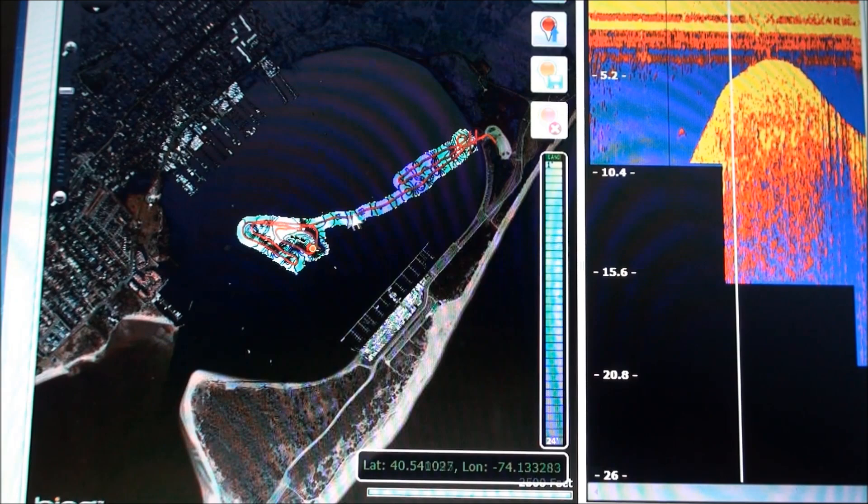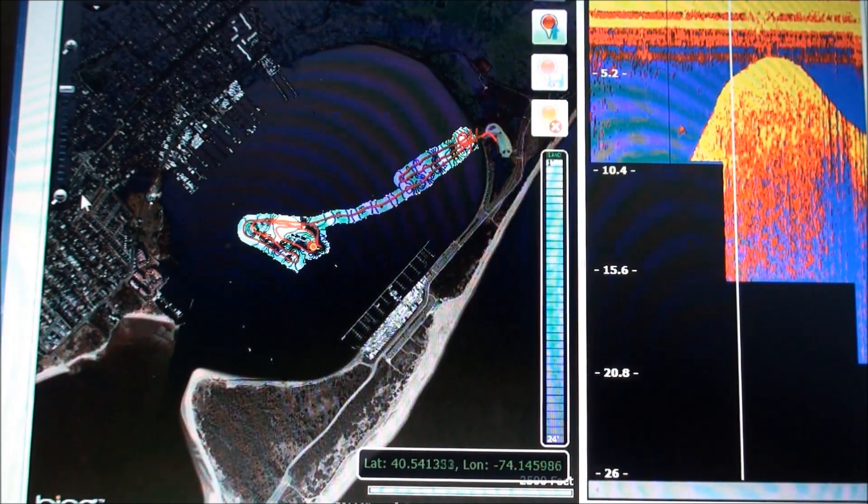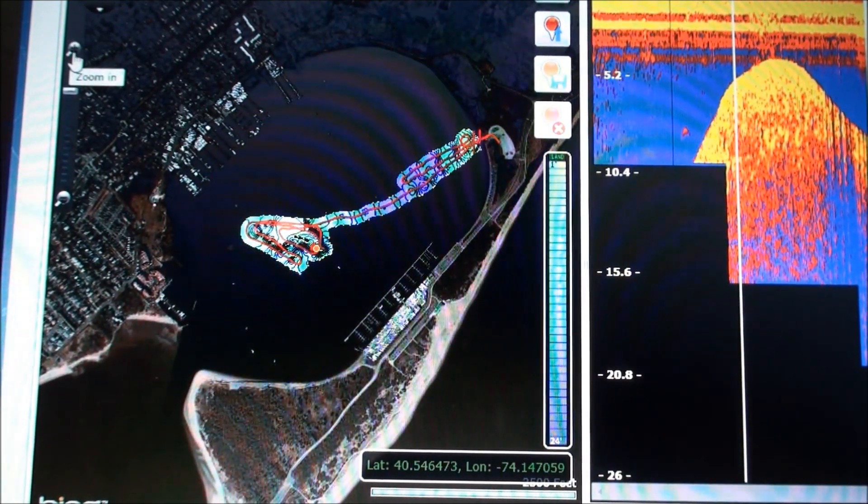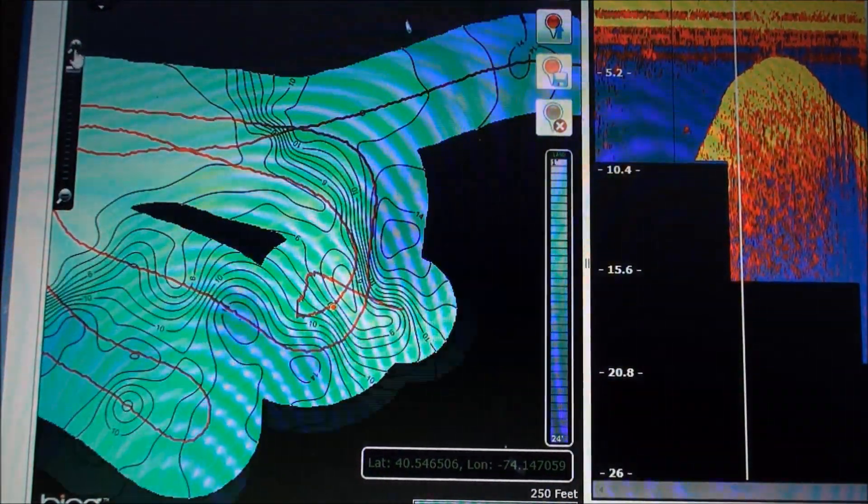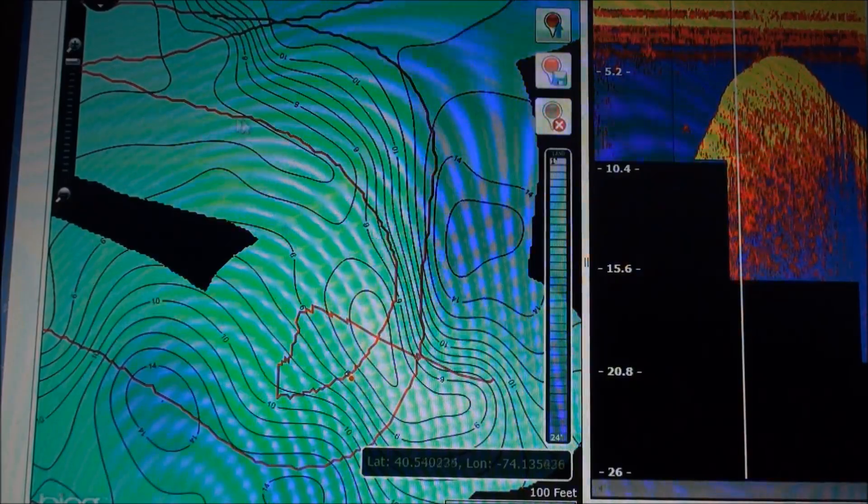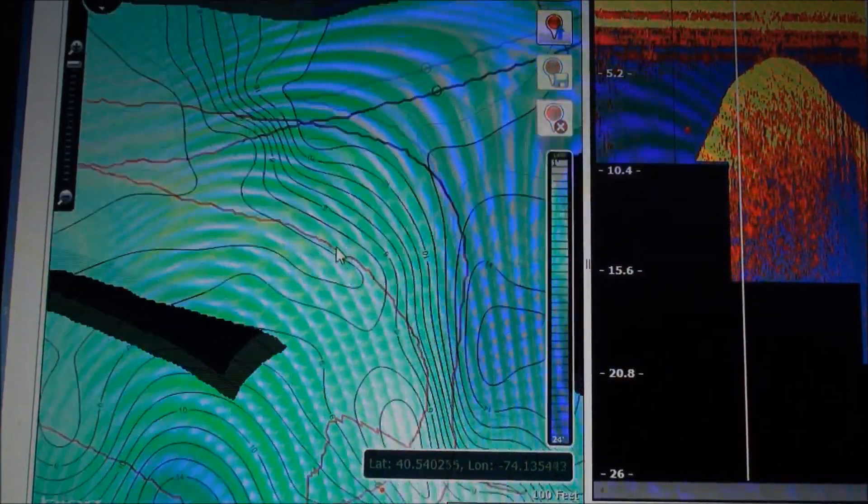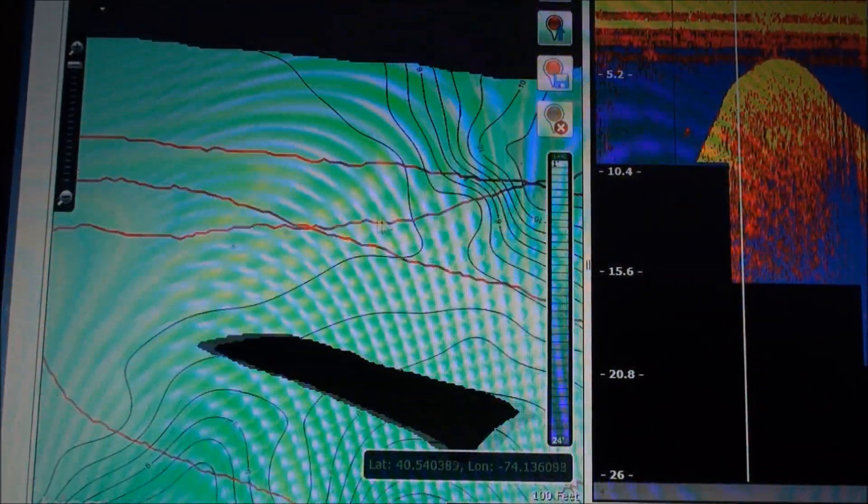I'm gonna zoom in. This red line is the path that we took with the boat. There's one foot contours. We built our own map.